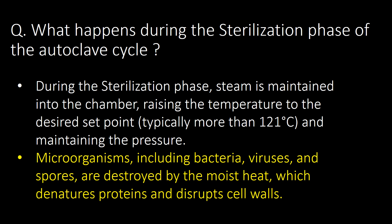What happens during the sterilization phase of the autoclave cycle? During the sterilization phase, steam is maintained in the chamber, raising the temperature to the desired set point — typically more than 121°C — and maintaining the pressure. Microorganisms including bacteria, viruses, and spores are destroyed by the moist heat, which denatures proteins and disrupts cell walls.